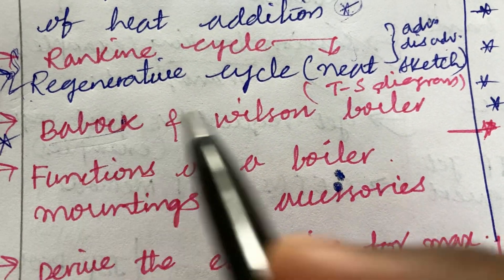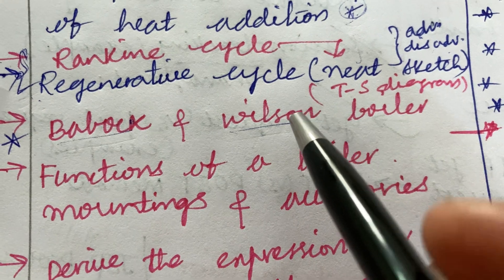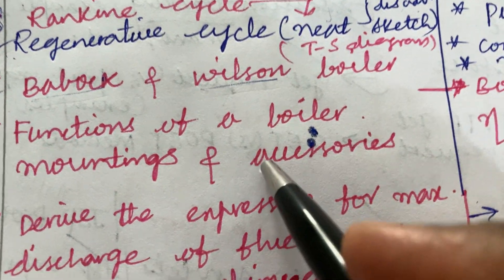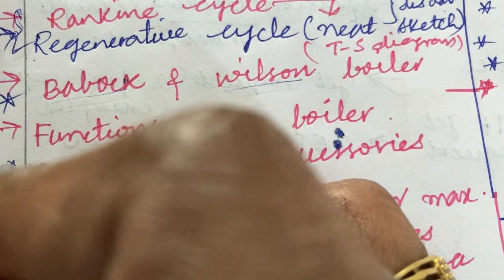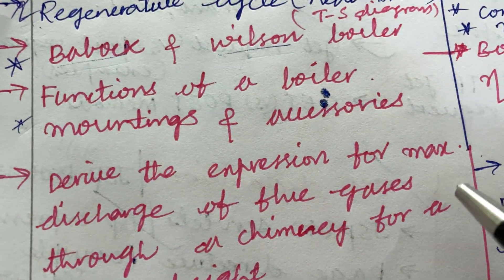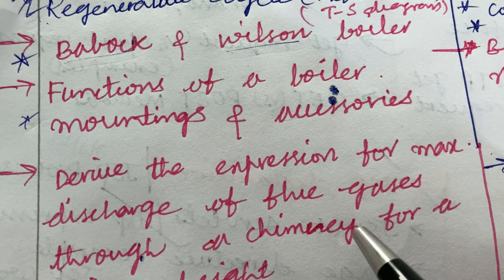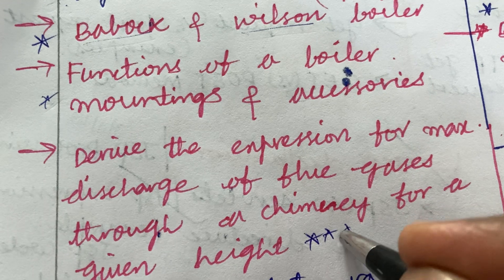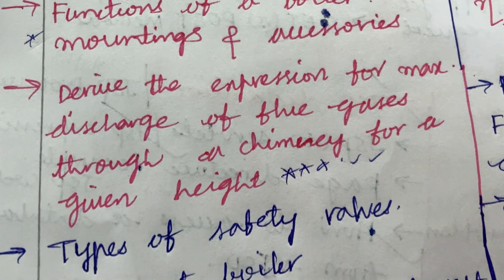Next coming to the boilers. The question on boilers is a damn sure question. This time Babcock and Wilcox boilers along with a neat sketch. Functions of the boiler mountings and accessories is said to be a short question. The next question for maximum discharge of the flue gases through a chimney for a given height is said to be a top most question and which is asked repeatedly for several times.